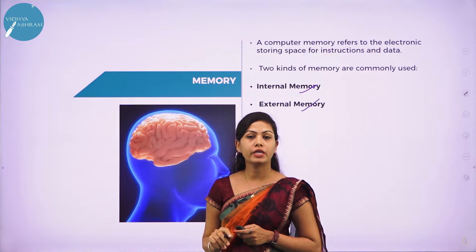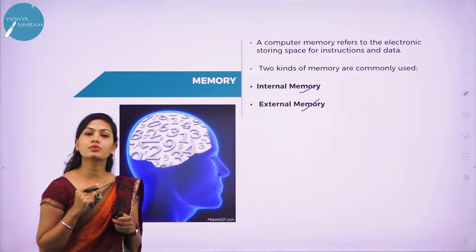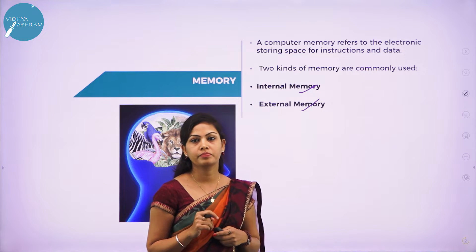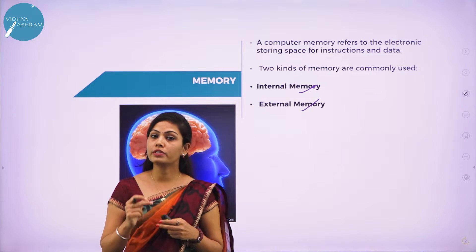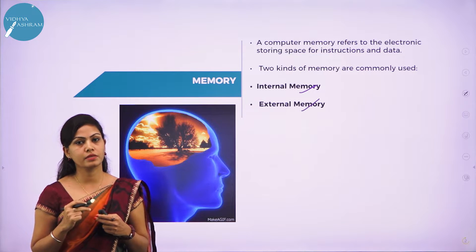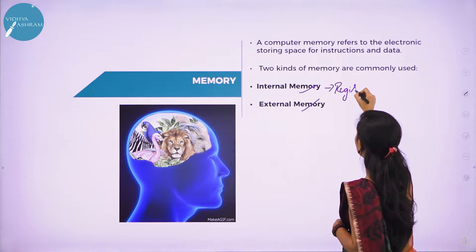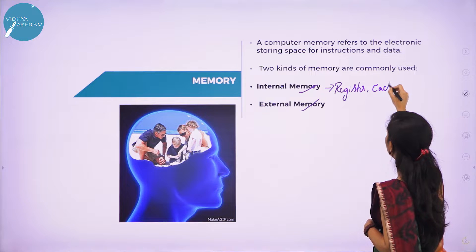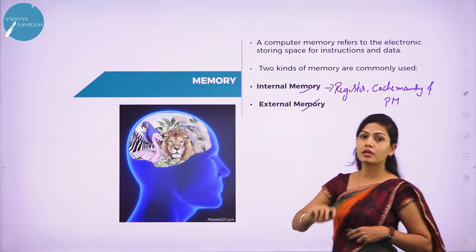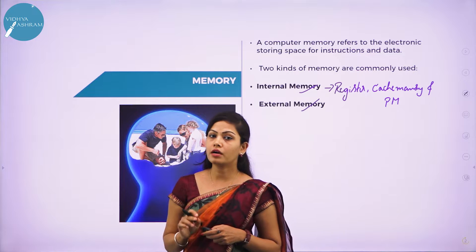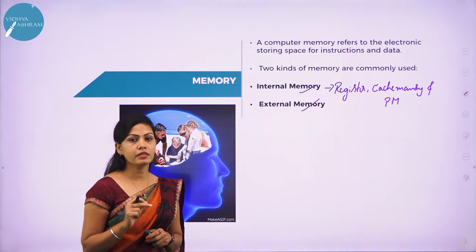Internal memory refers to memory that stores small amounts of data that can be accessed quickly while the computer is running. Internal memory includes registers, cache memory, and primary memory, which can be directly accessed by the processor. The features of internal memory are: temporary storage, limited storage capacity, fast access, and high speed.